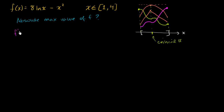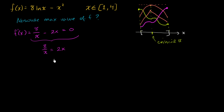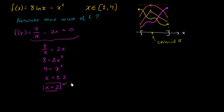Let's take the derivative of f. f prime of x is going to be equal to — the derivative of the natural log of x is 1 over x — so it's 8 over x minus 2x. Setting that equal to zero: add 2x to both sides to get 8 over x equals 2x; multiply both sides by x to get 8 equals 2x squared; divide by 2 to get 4 equals x squared, so x equals plus or minus 2. Since the function is only defined on [1, 4], negative 2 isn't in the domain, so we focus on x equals 2, which is definitely a critical number.